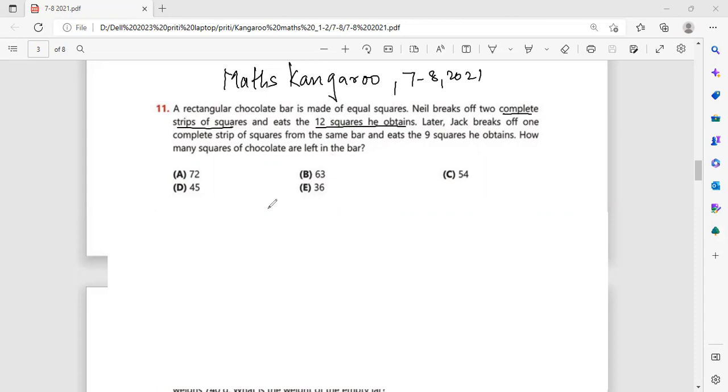So what does that mean? The 12 squares he obtained, he broke off two complete strips. So that means in each of the strip, he had six chocolates.